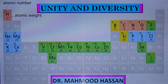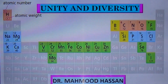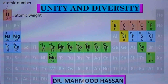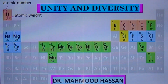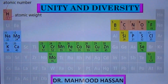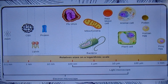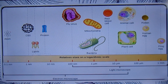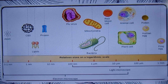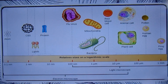Biological molecules include carbohydrates, proteins, lipids, nucleic acids, and many more. We will study these biological molecules in separate videos. Cell biologists often speak of the cell without specifying any cell, but cells are not alike.